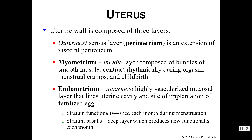Smooth muscles are involuntarily controlled, so we cannot consciously control the myometrium. The innermost region is the endometrium, a highly vascularized mucosal layer that lines the uterine cavity — this is where implantation of the fertilized egg is supposed to occur. The endometrium has two sublayers: the stratum functionalis and the stratum basalis. The functionalis is shed each month during menstruation, while the basalis is a deeper layer that produces a new functionalis each month — similar to how the stratum basale in the skin grows new cells that push outward.